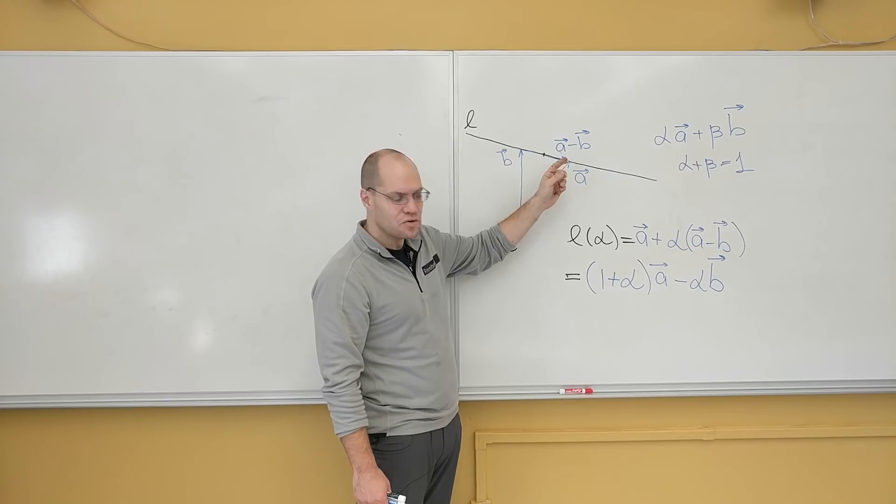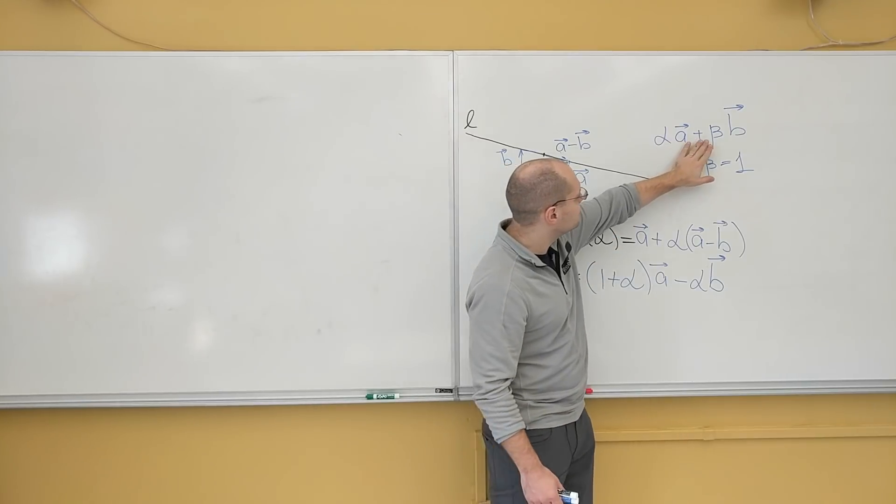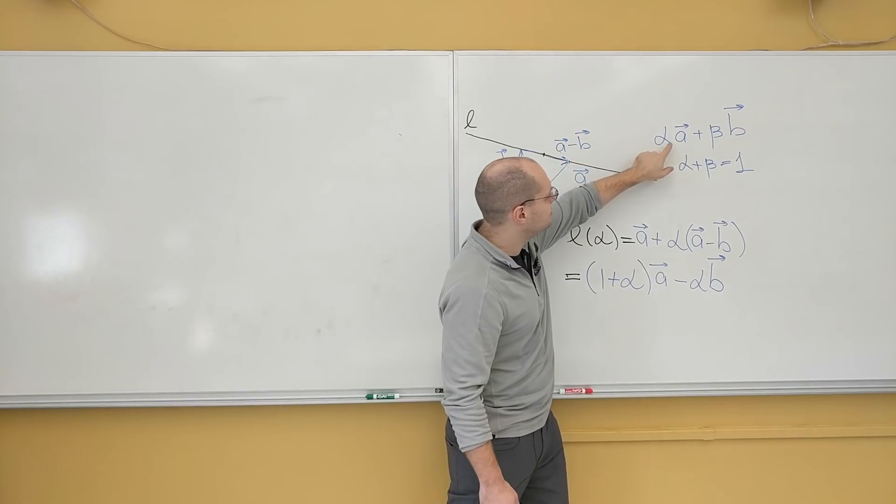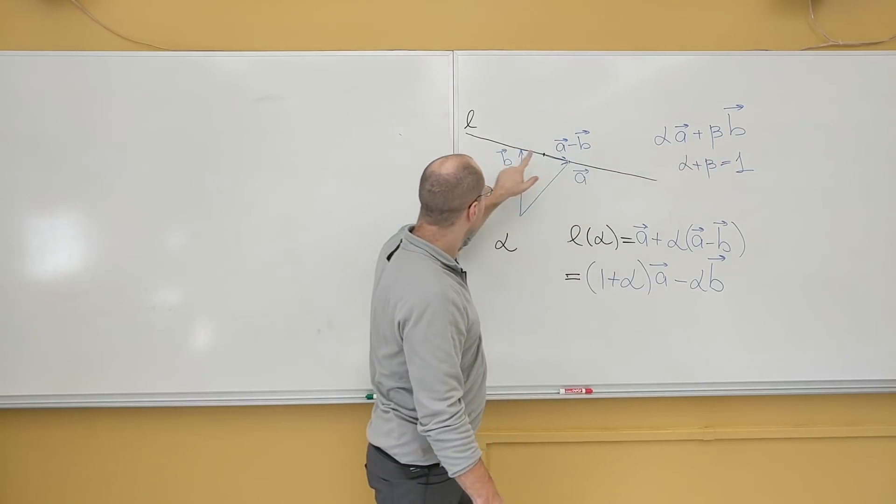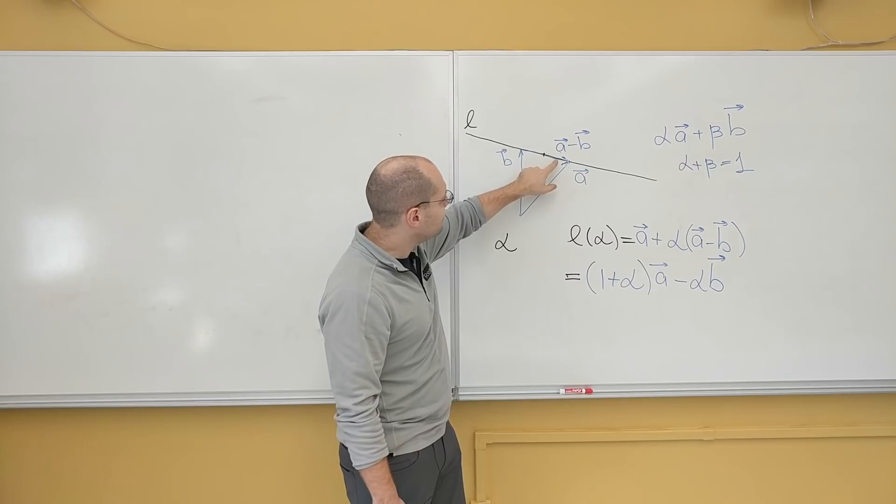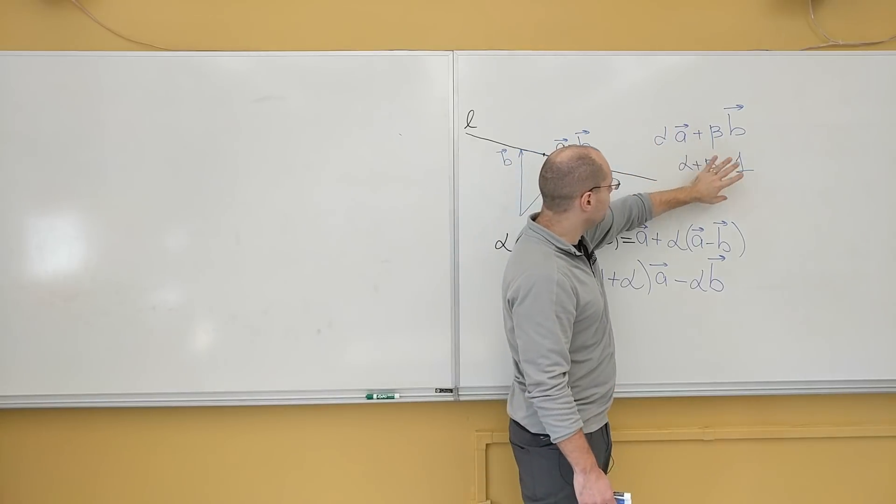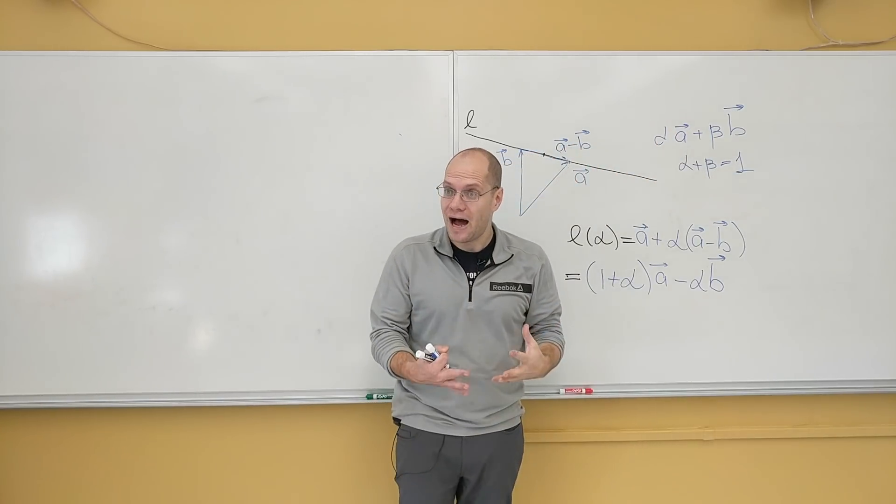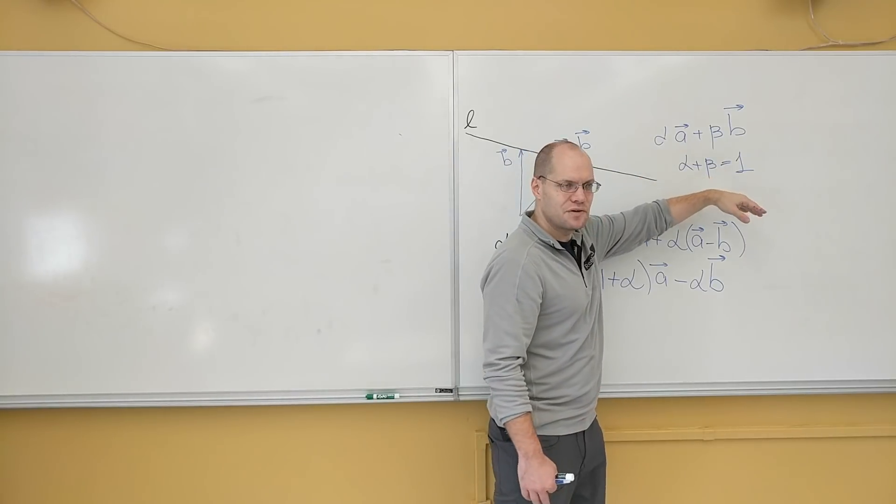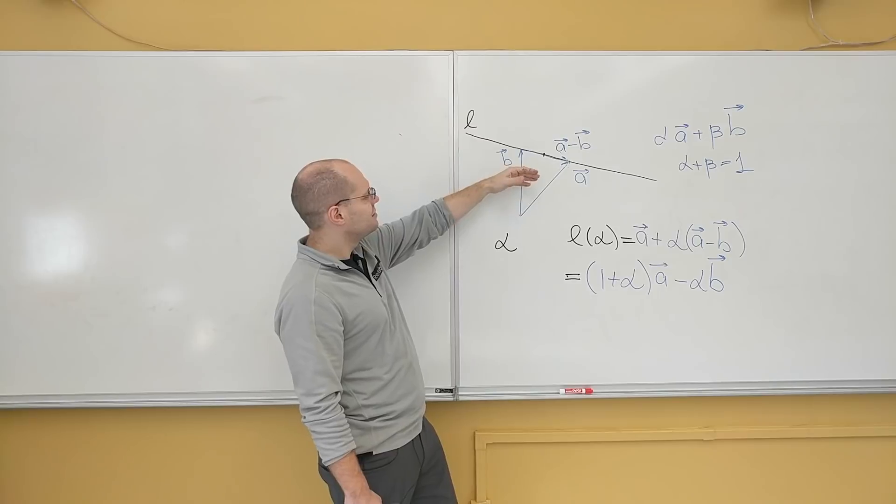Just think about this. If alpha is 1 and beta is 0, we're right here. If alpha is 0 and beta is 1, we're right here. If they're both 1 half, we're right here. If alpha is 3 quarters and beta is 1 quarter, we'll be right here and so on. So as long as the coefficients add up to 1, we're on this line. If they're both positive, then we're right between A and B. And if 1 is positive and 1 is negative, then we're to the right of one point. And if the other one is positive and the other one is negative, then we're to the left.